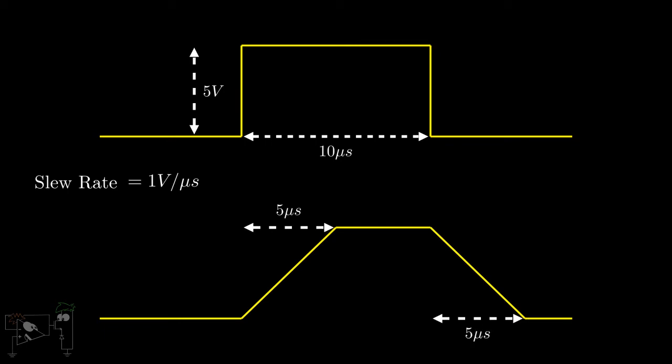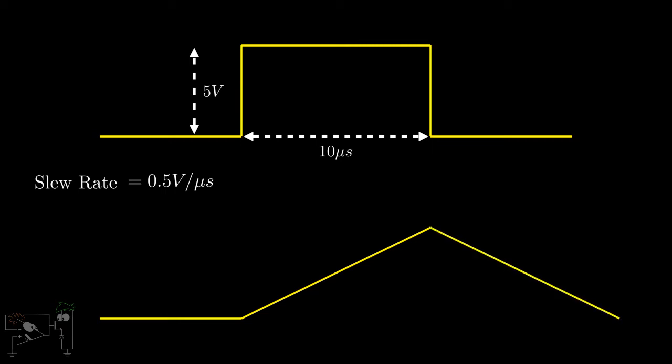Now consider a case in which the slew rate is 0.5 volts per microsecond. In this case, the output will take 10 microseconds to reach 5 volts. Hence, the output will just touch 5 volts and again fall down to 0.